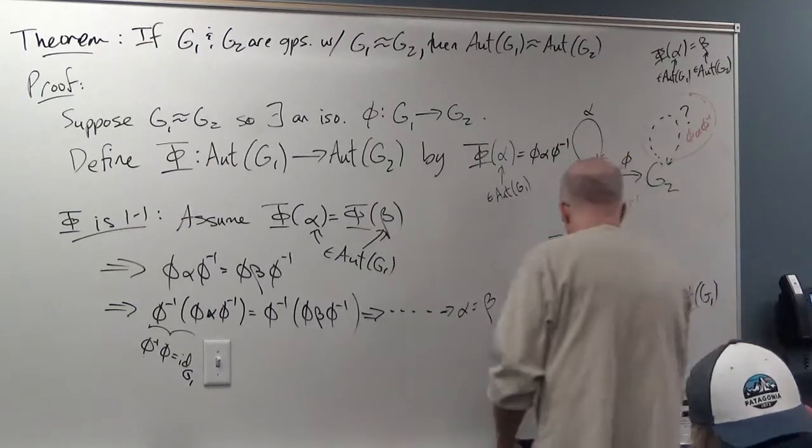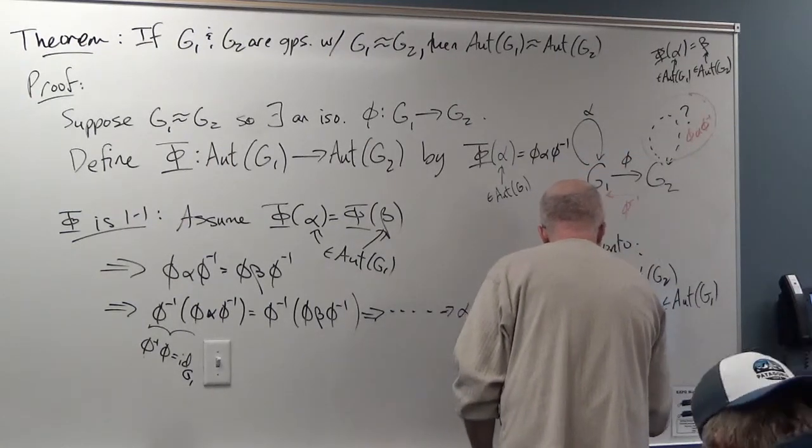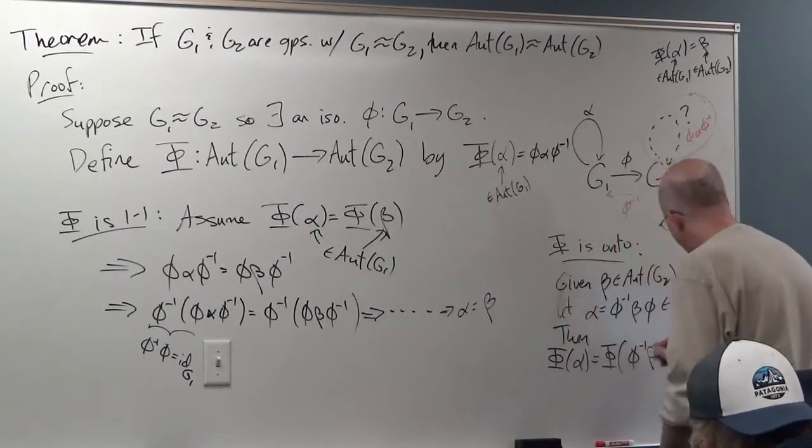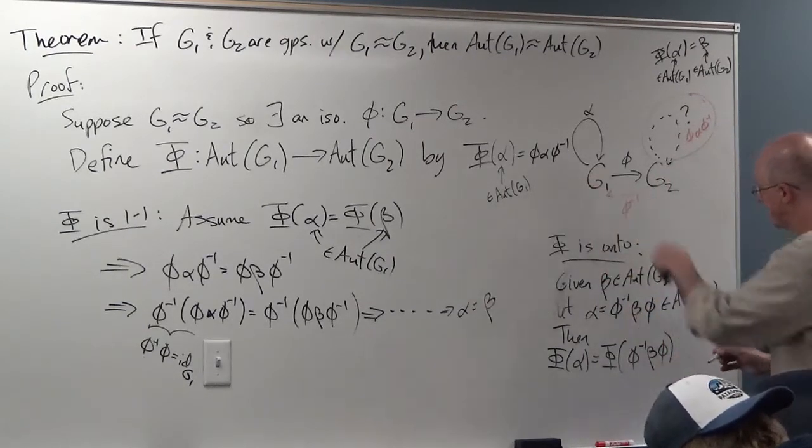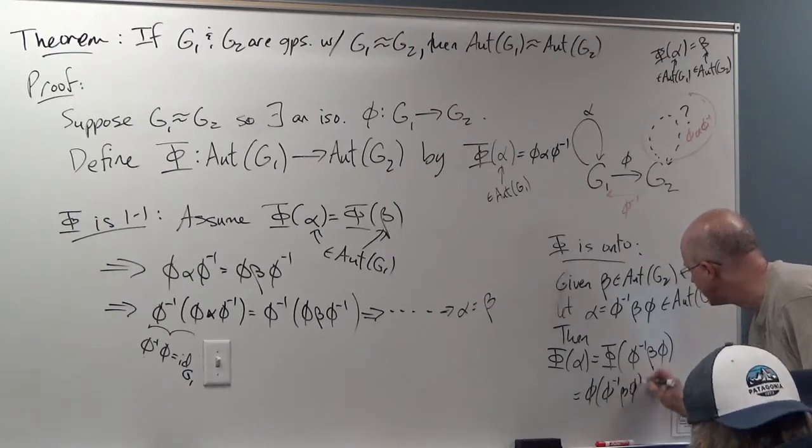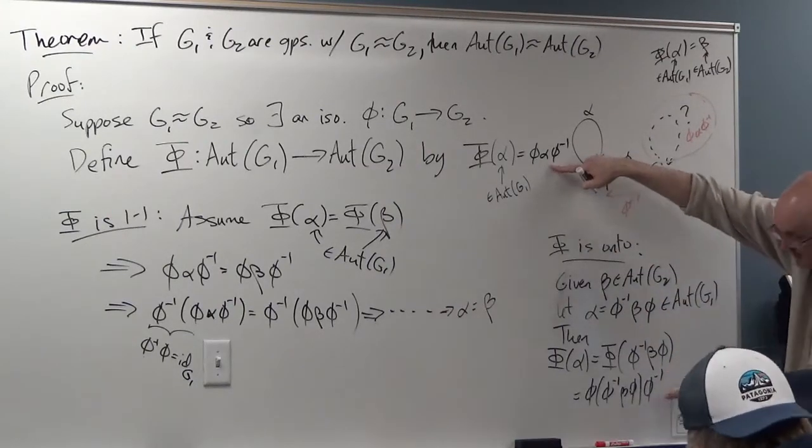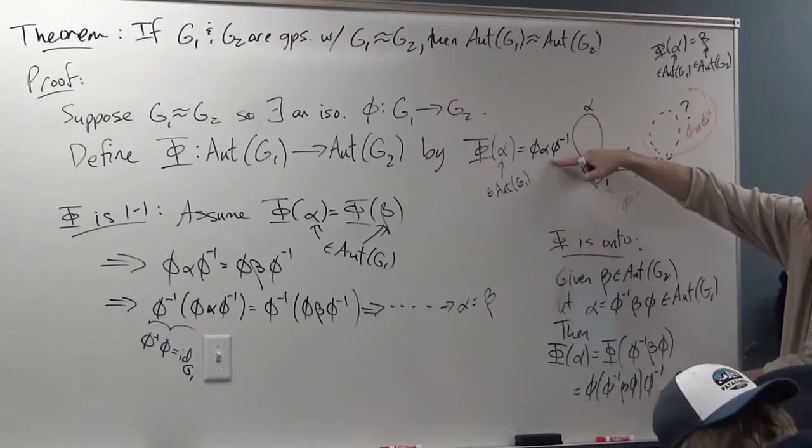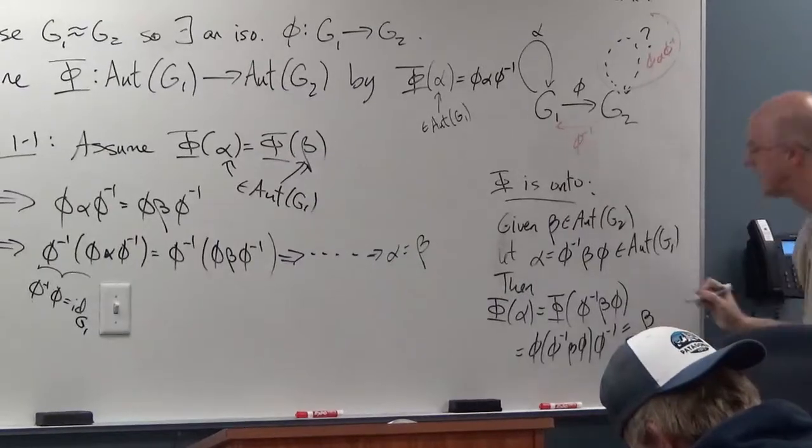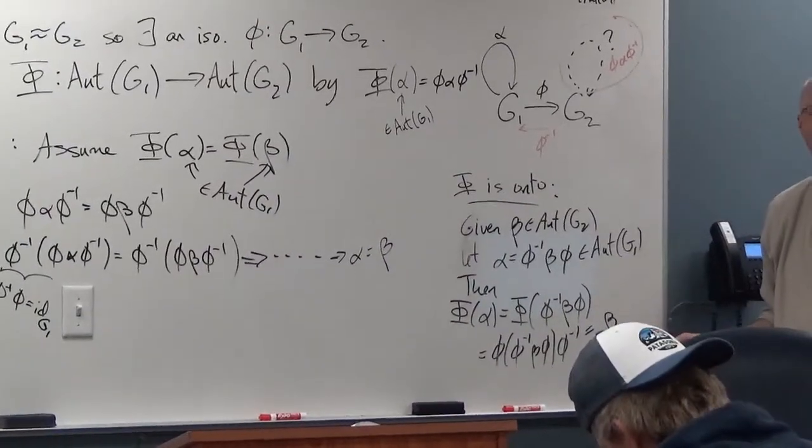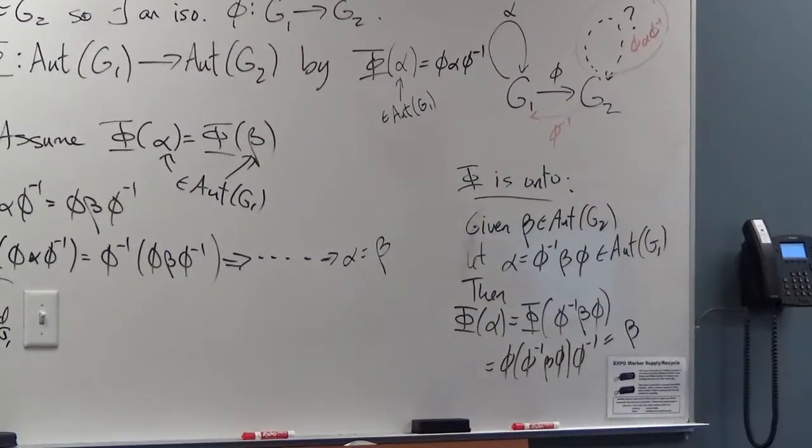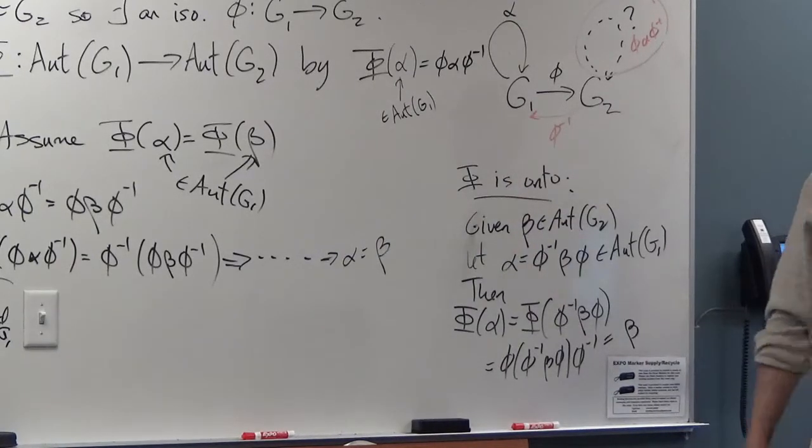And then, capital Phi of alpha is capital Phi of little phi inverse beta little phi, which by the formula for capital Phi is phi, then phi inverse beta phi, then phi inverse. Looking up here. And then the phi's and phi inverses cancel. They give you identity maps. The visualizer of the block, and you are left with beta. Can you see that down there? This head's a little in the way, but it's fine. Is capital Phi operation preserving? That's the only thing left.